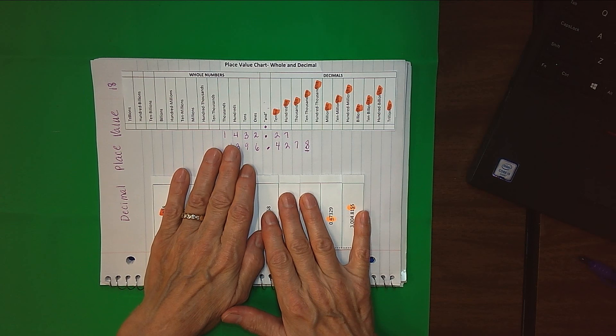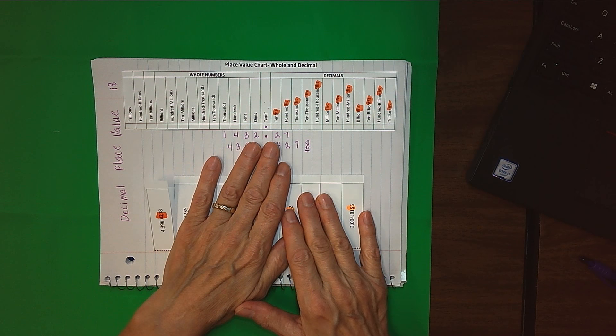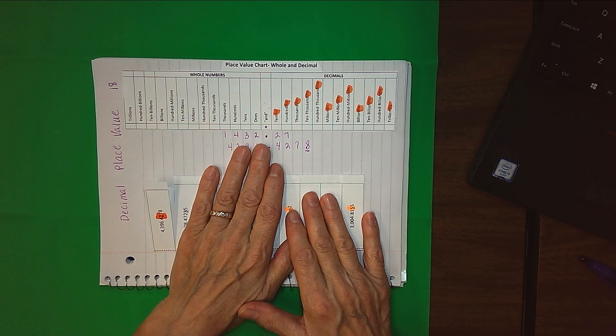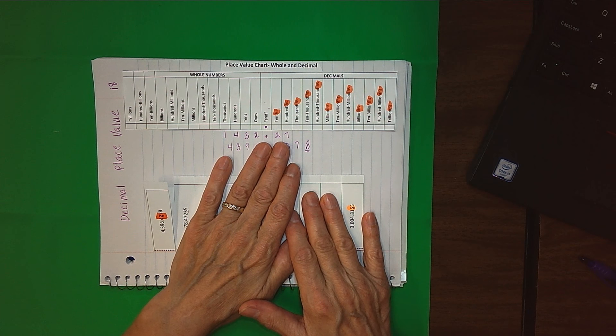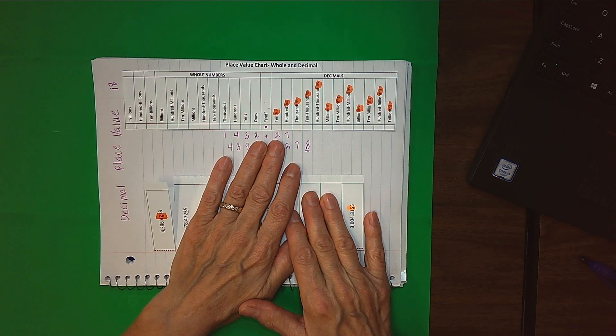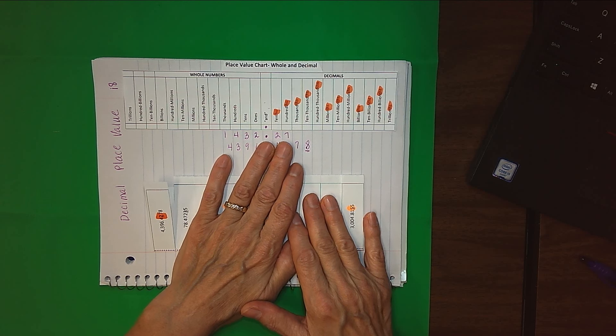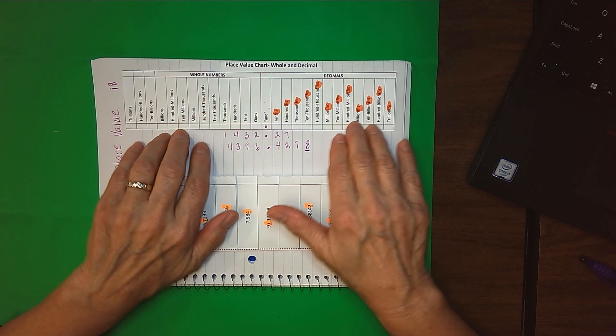If I were reading this number here, $1,432.27, you can see that the and is where my decimal goes, and then the 27 cents is less than a whole dollar. Now we need to be able to tell that this two is in the tenths place and this seven is in the hundredths place. We've got a place value chart here to help us with that.